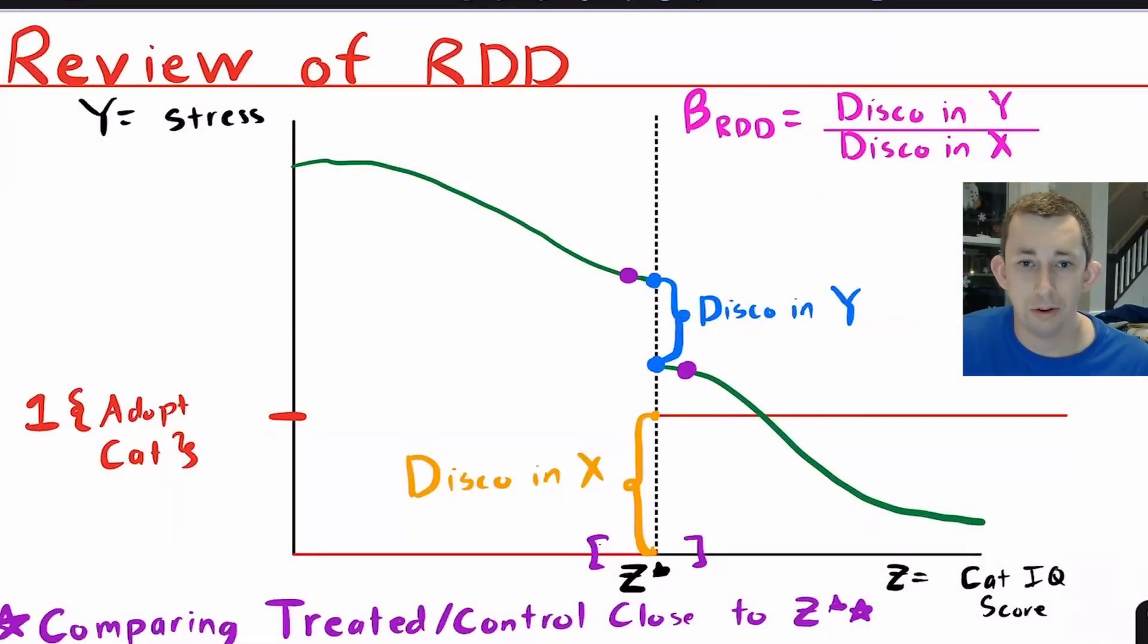Let's quickly review a regression discontinuity design. So in RDD, we're trying to estimate the effect of some treatment variable or x variable on your outcome variable or y variable. And that treatment variable is going to be a function of some other variable z, which we call the running variable. And that treatment status is going to change at some exact value of your running variable, which we call the threshold.